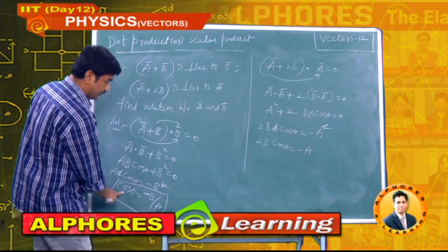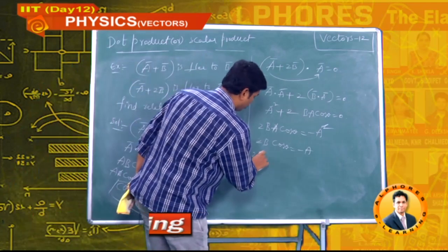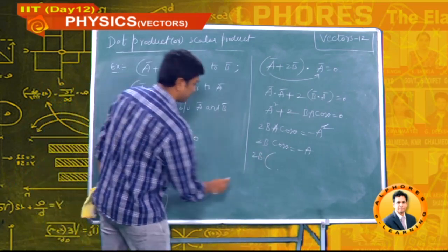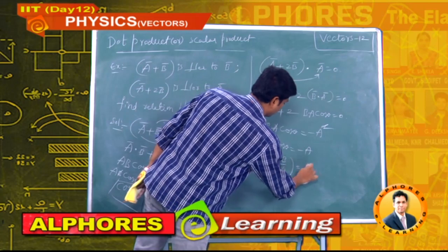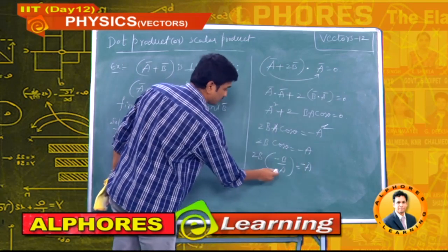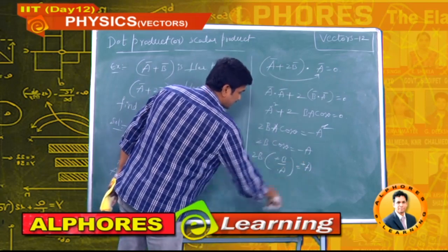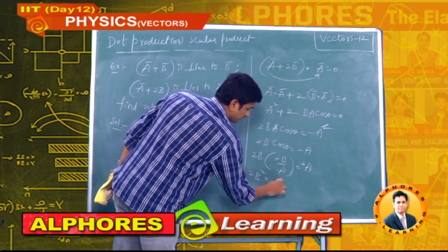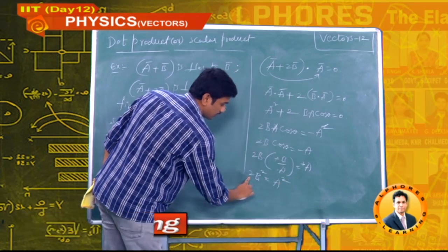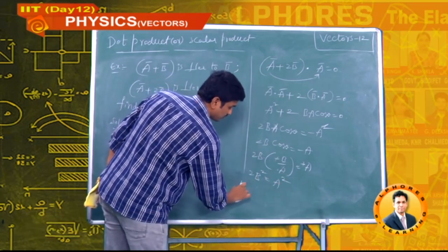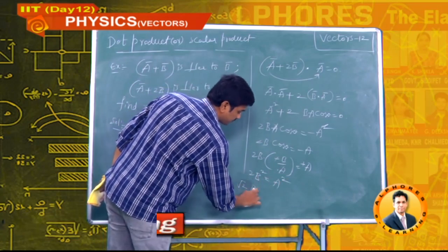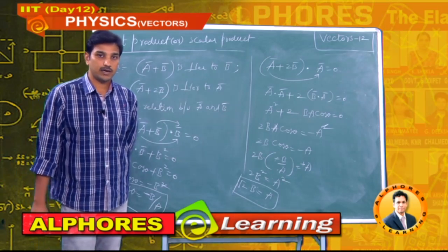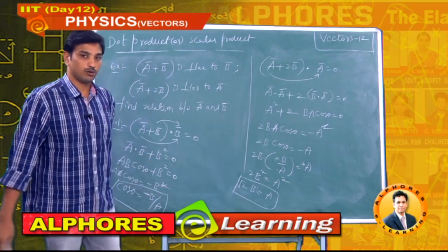Substituting cosθ = −B/A from the first condition: 2B(−B/A) = −A, so 2B² = A². Taking the square root on both sides: √2 · B = A.